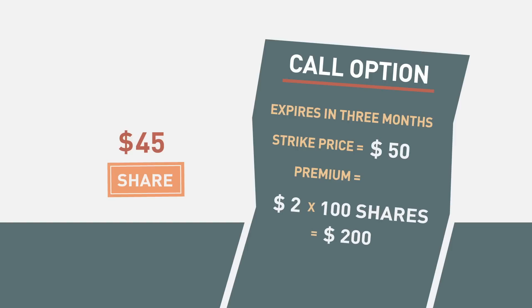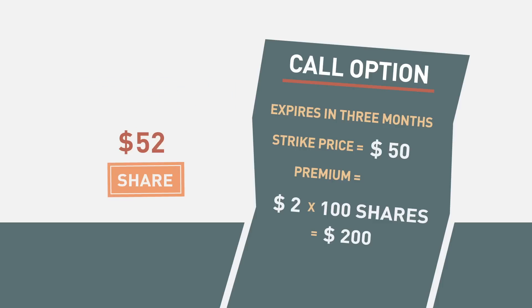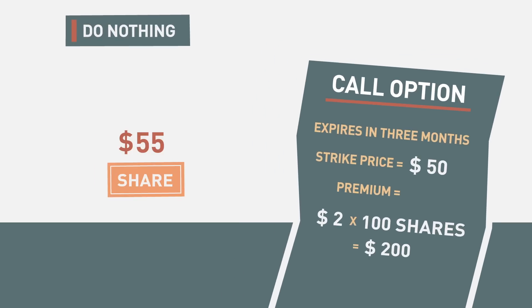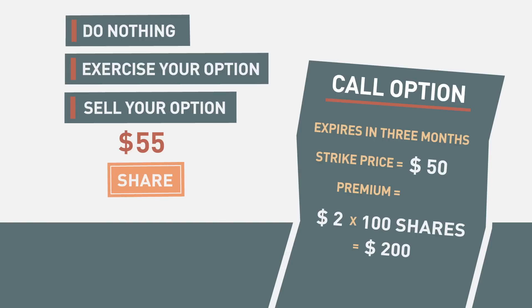Now, if the price of the company's stock rises above $50, you are considered to be in the money. Let's say the price reaches $55 per share after one month. You have three possible courses of action: you can do nothing and wait to see if the price continues to rise, you can exercise your option, or you can sell your option.